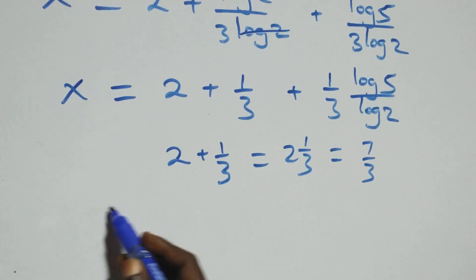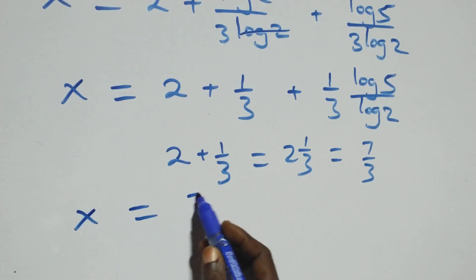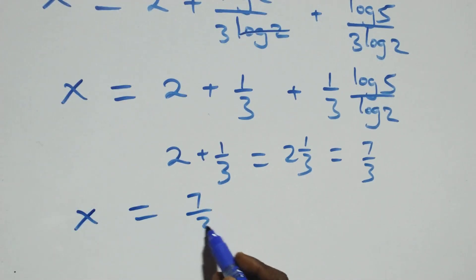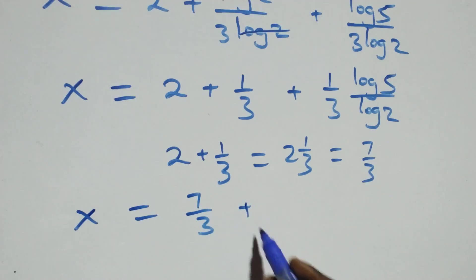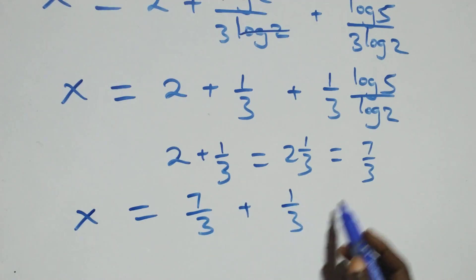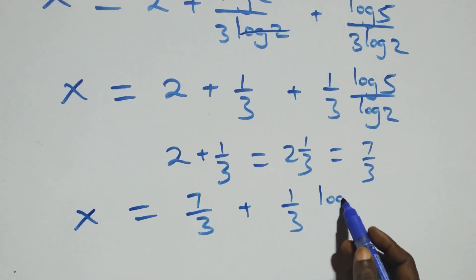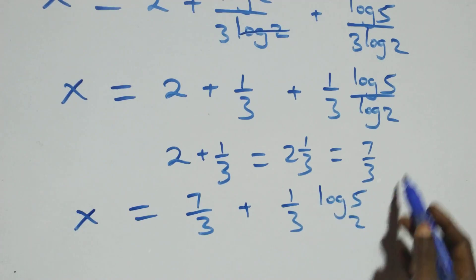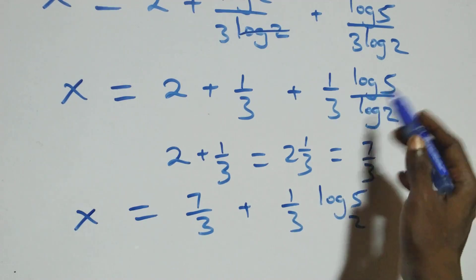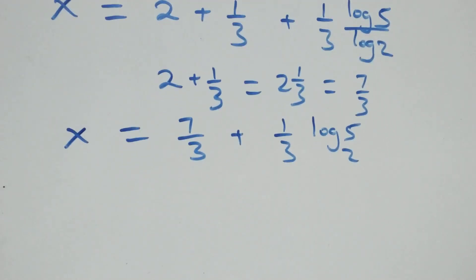So we have x equals 7 over 3 plus 1 over 3 multiplied by log 5 base 2. Applying the change of base rule, we bring this together as one fraction: x equals 7 plus log 5 base 2, all over 3.